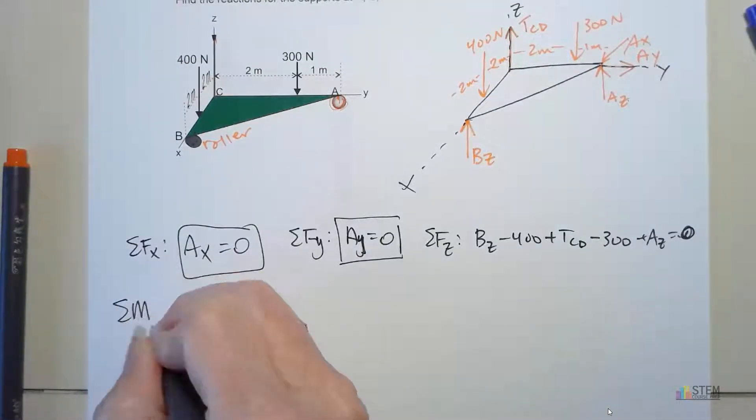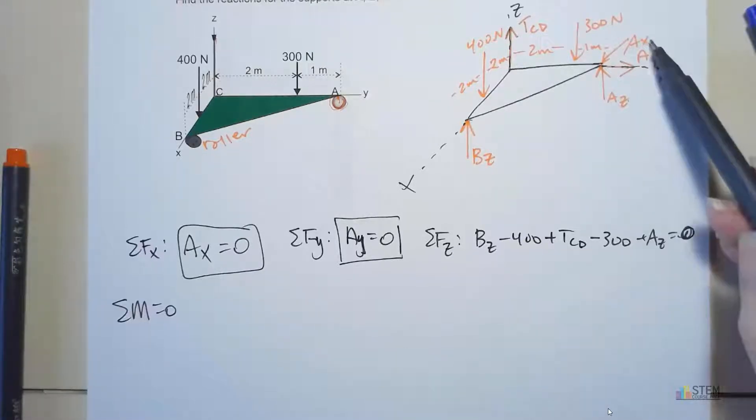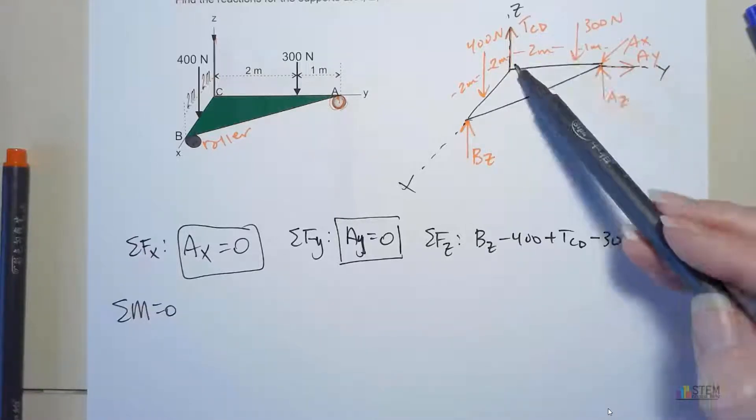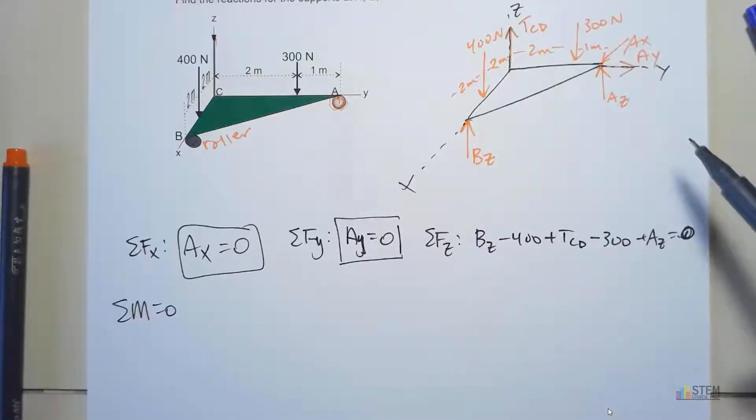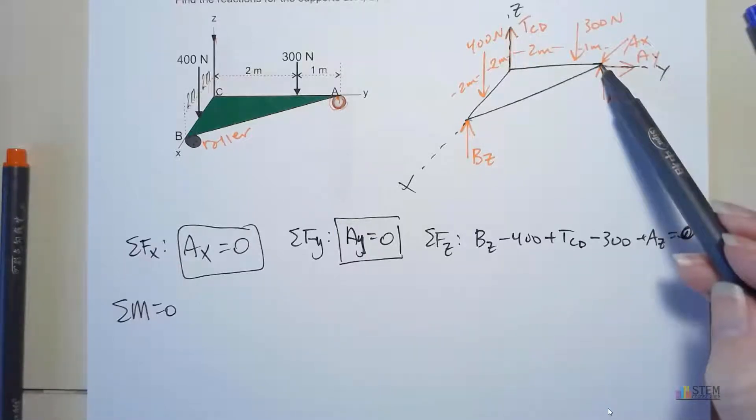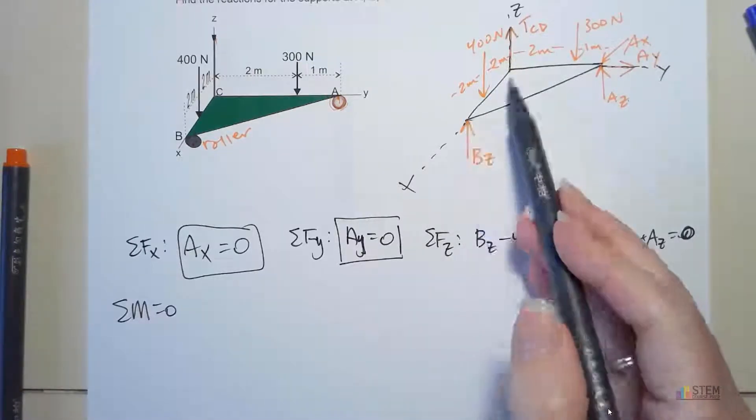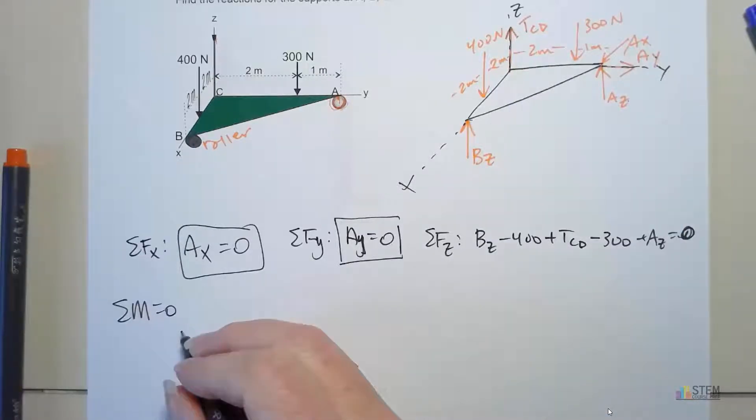Now let's look at our moments. You need to figure out what point you want to use. Remember, you want to pick the point that has the most forces going through it, the most unknowns. For this case, we don't really have one point that's better because we already know AX and AY are both zero. So we have one force at this point, one here, one here, one here, and one here. No point on this one is better than another. If you didn't know these two components, you'd want to pick A for sure. I'm going to go ahead and pick A anyways, but you could pick any of the points.